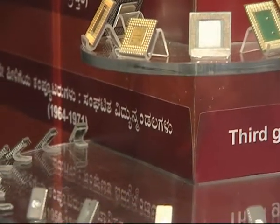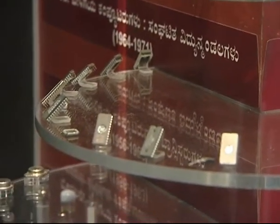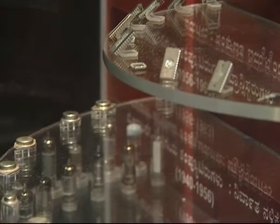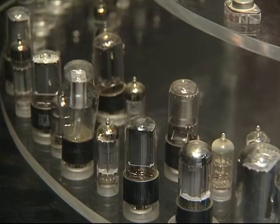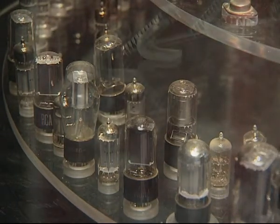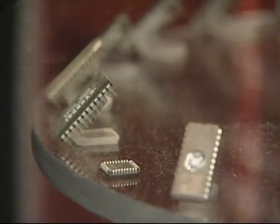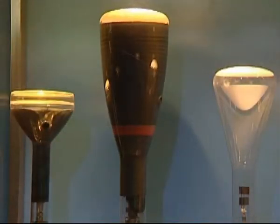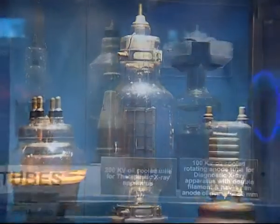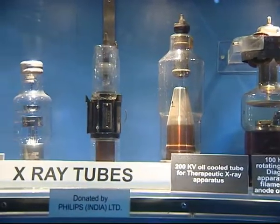Being surrounded by highly evolved technology like LED televisions and high speed computers, it is easy to forget the long and hard journey that it took to get us to this point. At the museum, there are many displays that remind us of this journey. From transistors and integrated chips to cathode ray tubes, the history of everyday devices is on display right here.